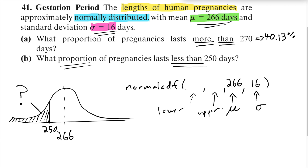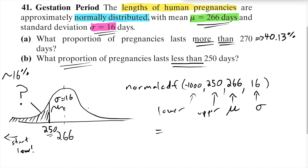For the lower we want to start calculating area quite a bit to the left, so I'm going to put in negative 1000. Then 250 is the upper — that's where we want it to stop. Notice this is one standard deviation below the mean since the standard deviation is 16. According to our empirical rule we'd expect about 16%, and the calculator gives us a more exact answer: 0.1587. So 15.87% of pregnancies last less than 250 days.